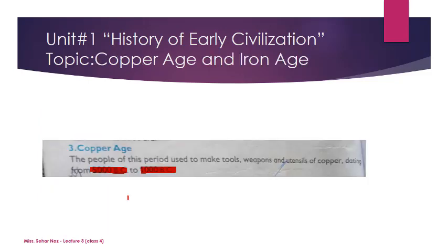Today students we will learn about the Copper Age. The Copper Age is the period when people used to make tools, weapons and utensils of copper. Is daur mein copper dhat se cheezhe banaate the, and this era dates from 5000 BC to 1000 BC — ye time period ko represent karta hai.